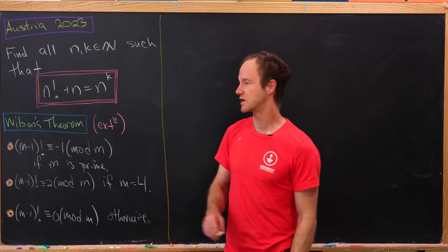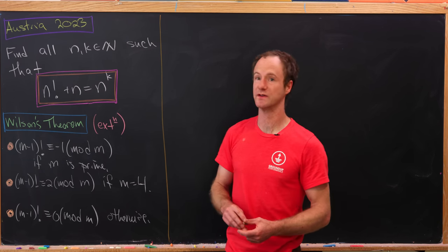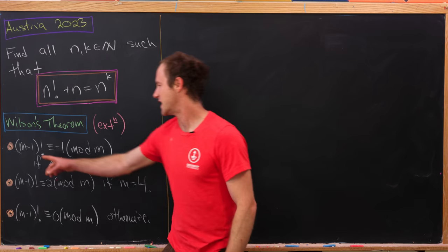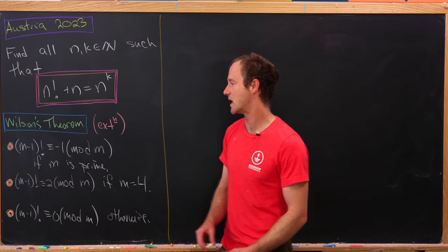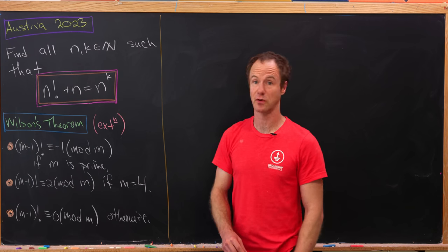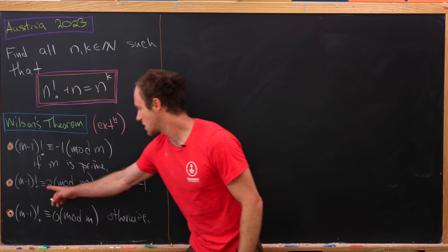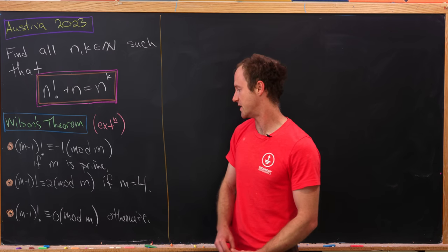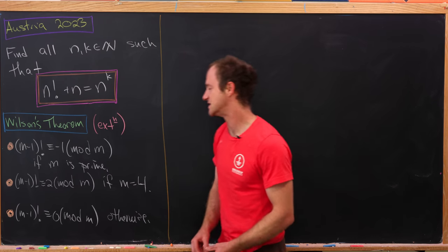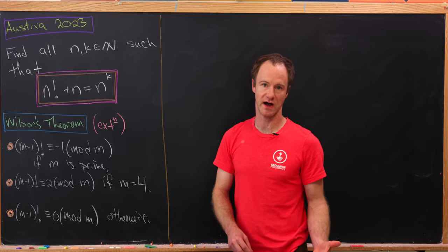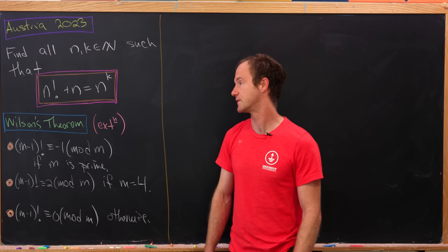Along the way in our solution we're going to use a pretty simple extension of Wilson's theorem. It states that (m-1)! is congruent to -1 mod m if m is prime, congruent to 2 mod m if m equals 4, and congruent to 0 mod m otherwise — that is, if m is composite but not equal to 4.